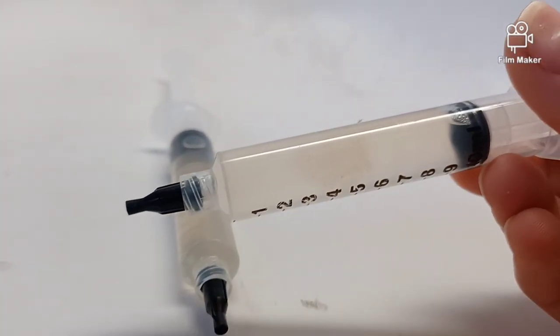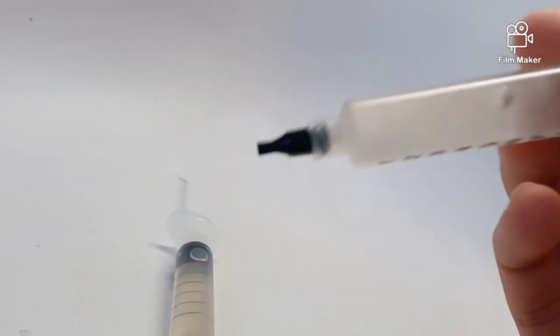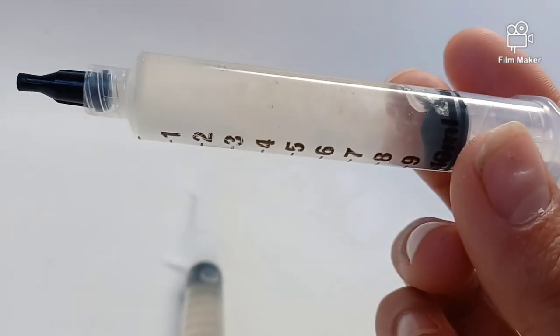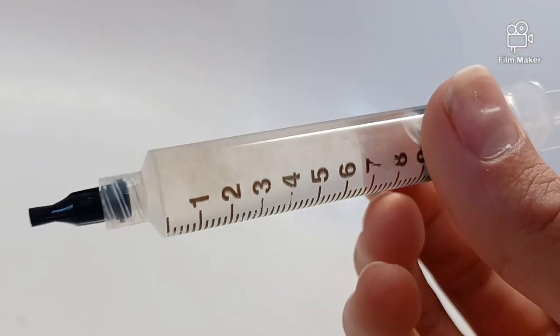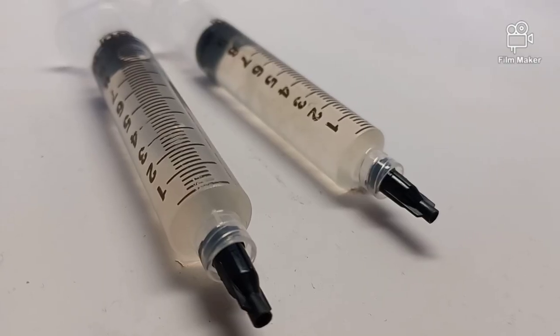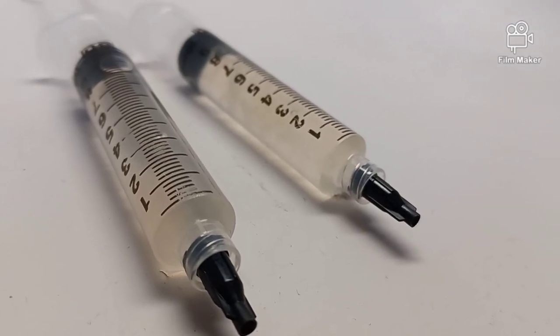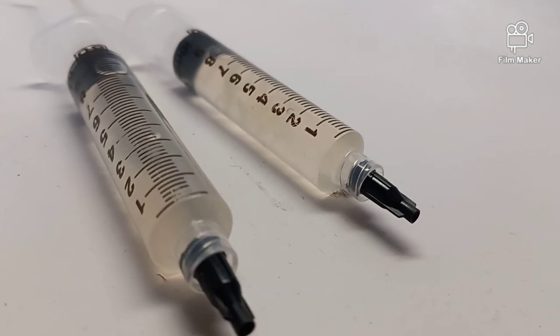This is a Blue Oyster. This is a Reishi syringe. These can be stored in the fridge for up to a year or even more.